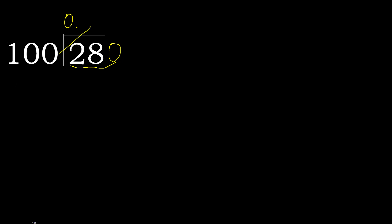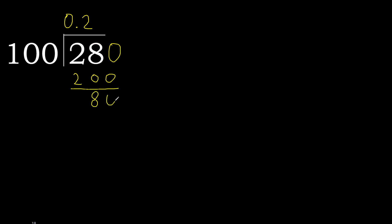100 multiplied by which number is nearest to 280 but not greater? 100 multiplied by 3 is 300 — 300 is greater. Multiplied by 2: 200 is not greater. Subtract, that is 80. Next.